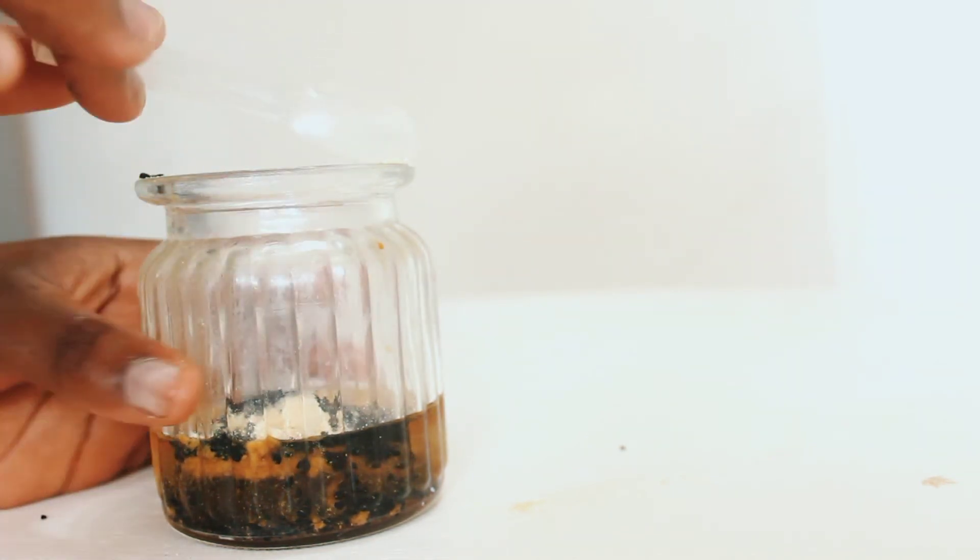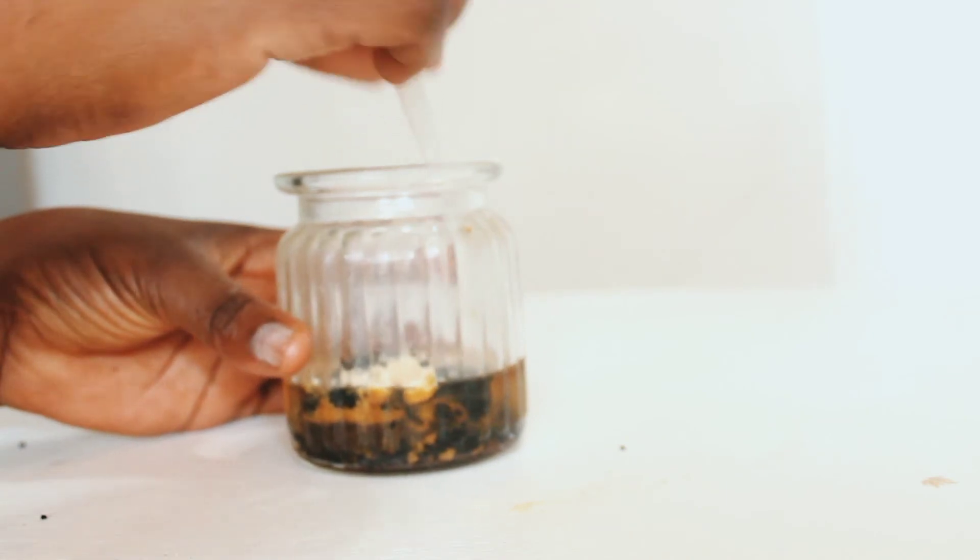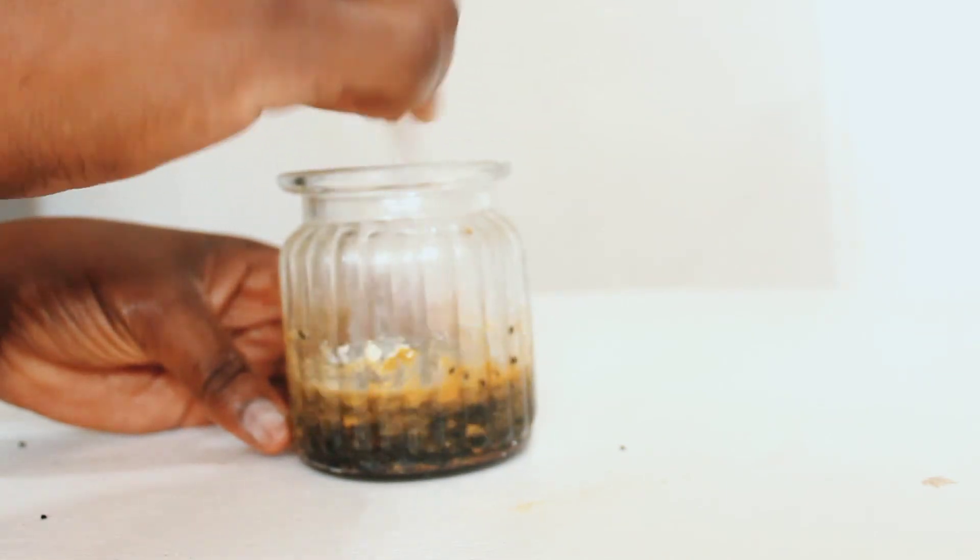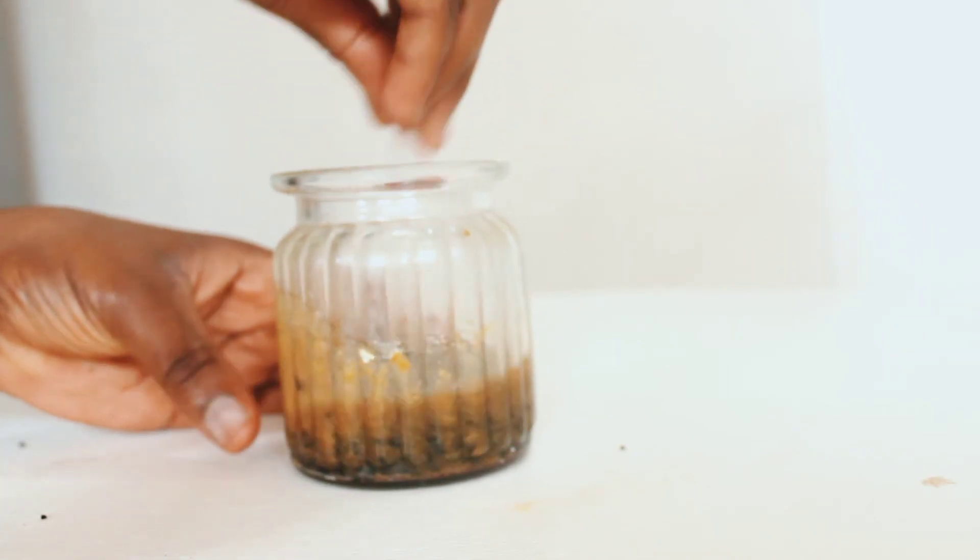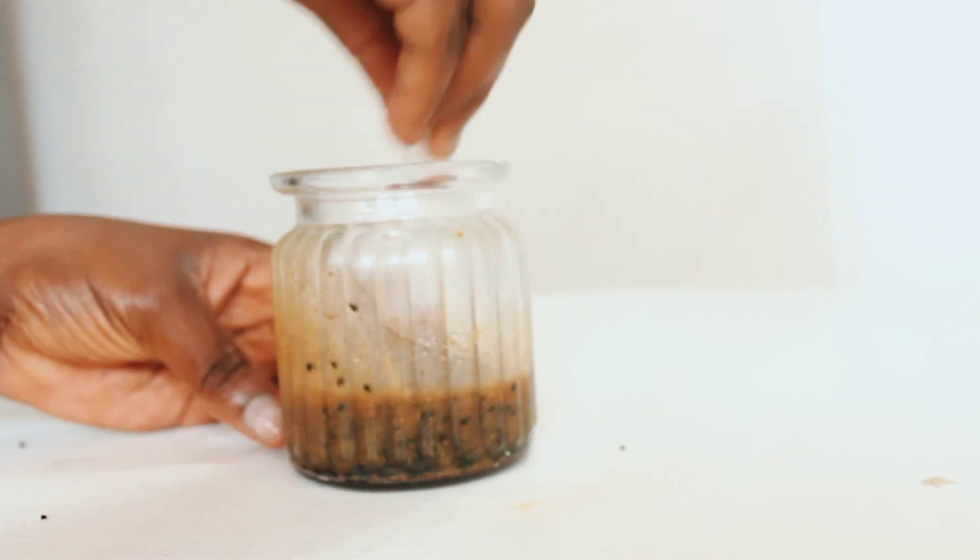But yeah, I just quickly mix all the dry ingredients with the oil, and I will close it and leave it for about two weeks before I can start using it. And I also love using it when I have my braids on or on my cornrows when I'm wearing my wigs.